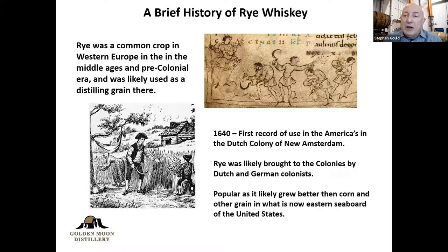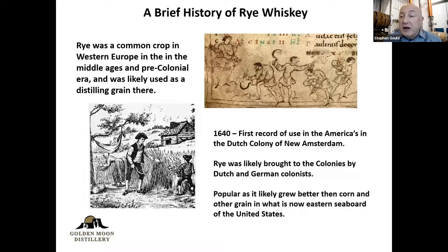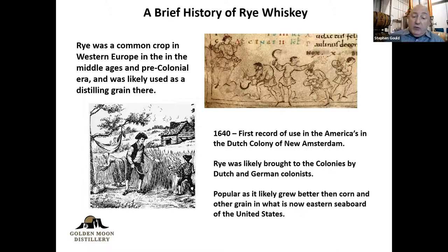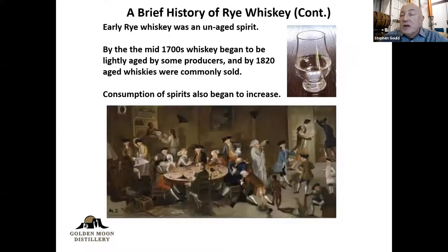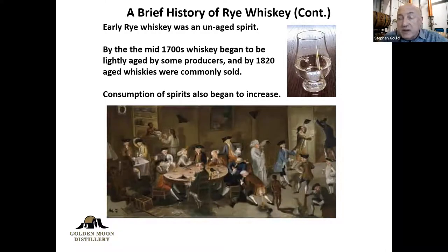Rye was very popular in at least the central and northern colonies of the 13 original American colonies because it grew really well — better than corn, better than other grains. So rye became the preferred grain of choice in the Americas, and you saw this in what we now call Canada as well. It was so incredibly popular that up until prohibition in the 1920s, the vast majority of distilled spirits produced in the United States were produced off of rye grain in some way, shape, or form.